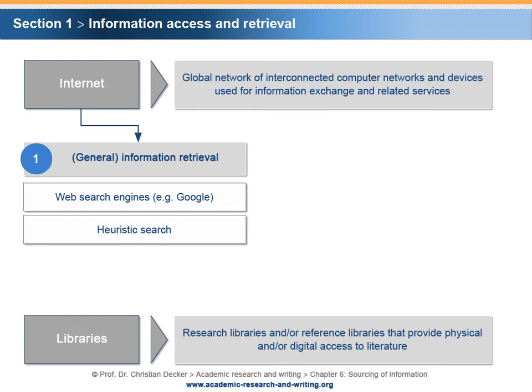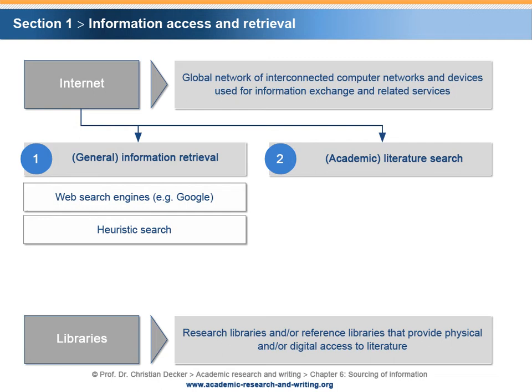The second way of retrieving information about a research project is the academic literature search. There are a number of possible search methods. Scholarly search engines, for example Google Scholar, allow searching for academic articles and, in some cases, redirect the user to free or paid services in order to access these articles.